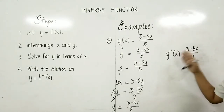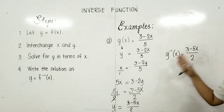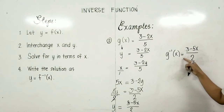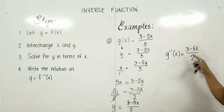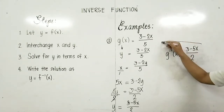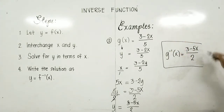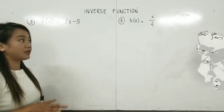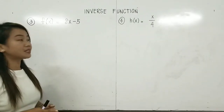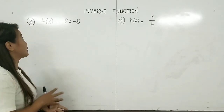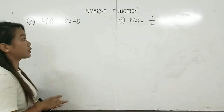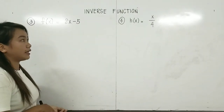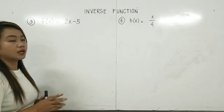So the inverse of g(x) is equal to (3 − 5x) / 2. This is our formula. We will now apply the 4 steps to examples 3 and 4.